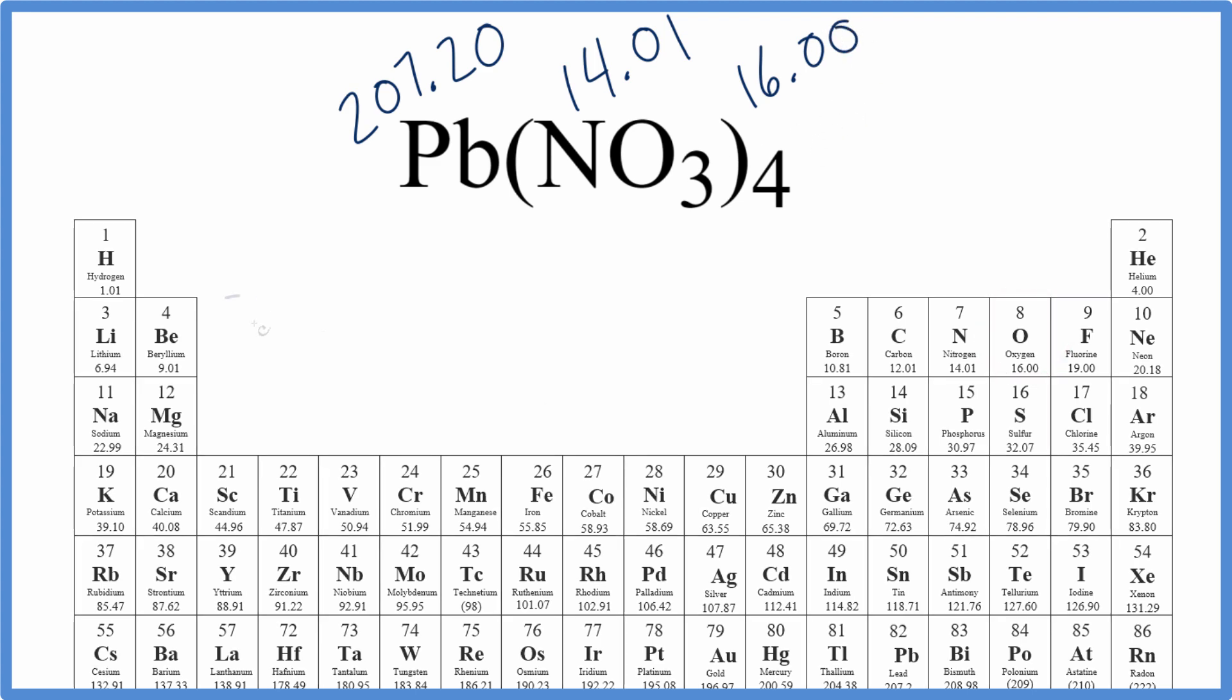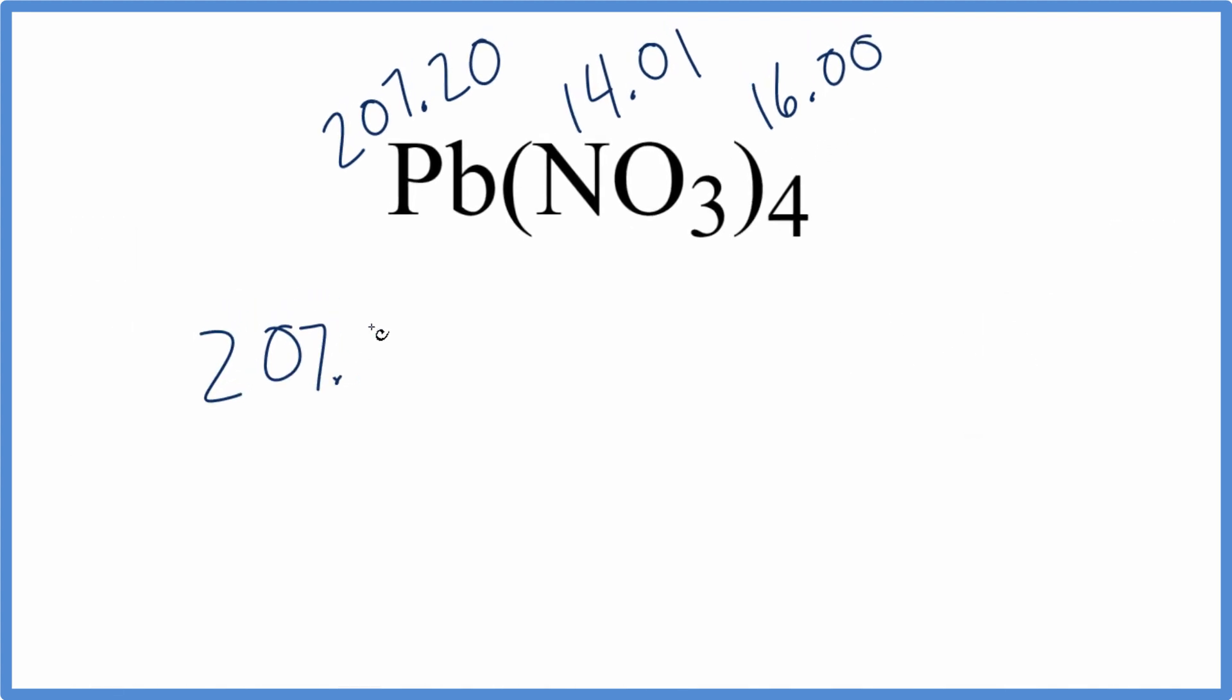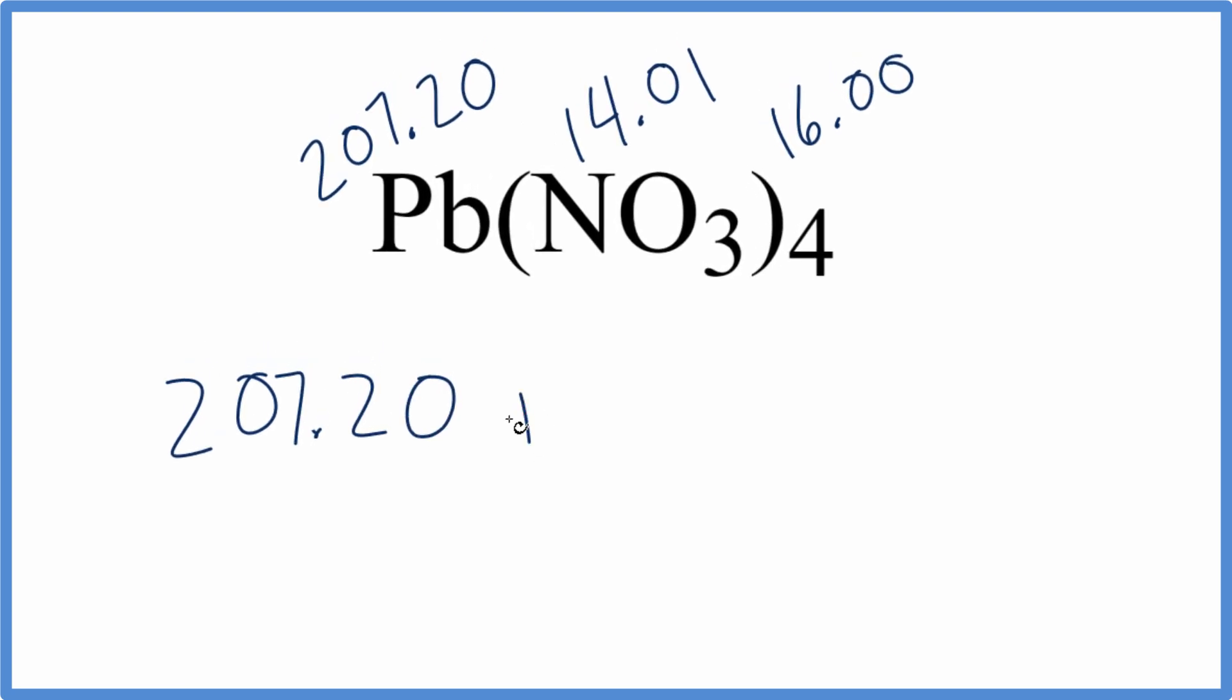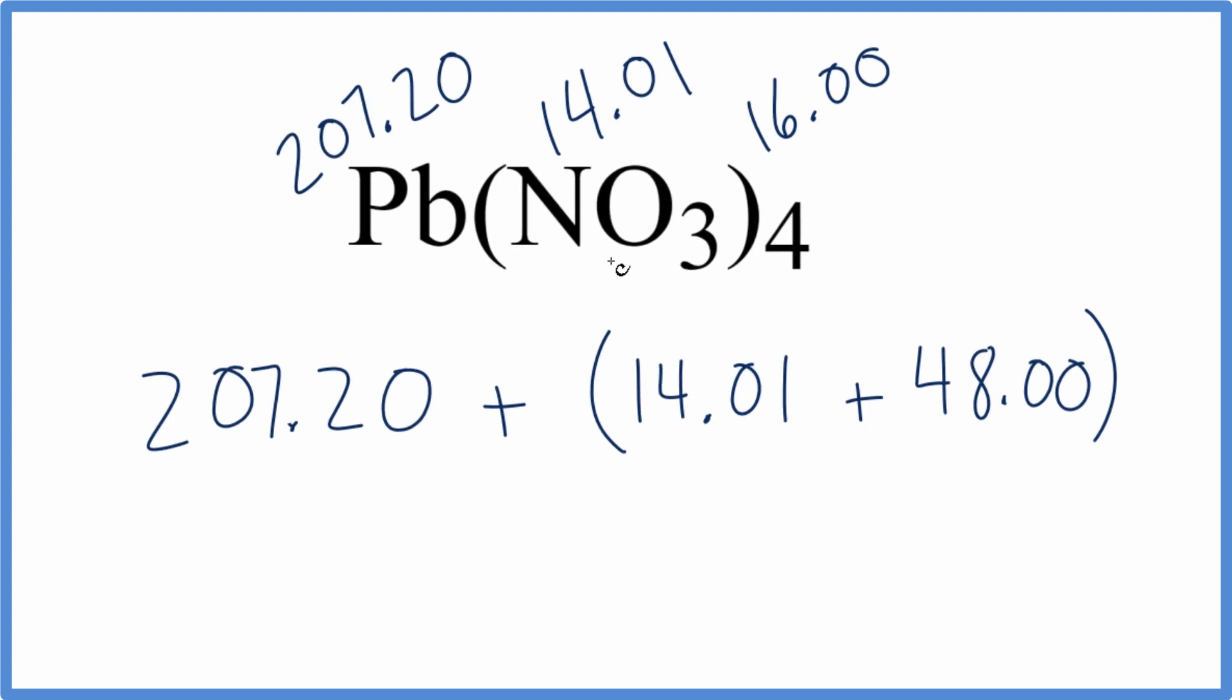So we'll write down 207.20 for lead, plus, let's put our parentheses here, 14.01 for nitrogen, plus 3 oxygens, so 3 times 16.00, that gives us 48.00, and then we'll multiply all of this by 4.